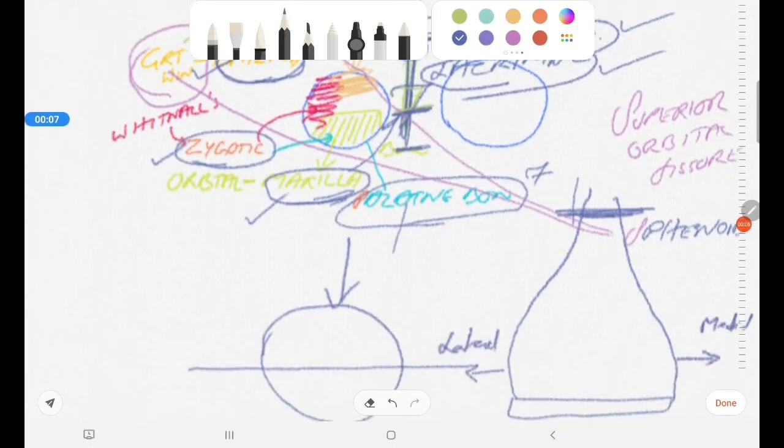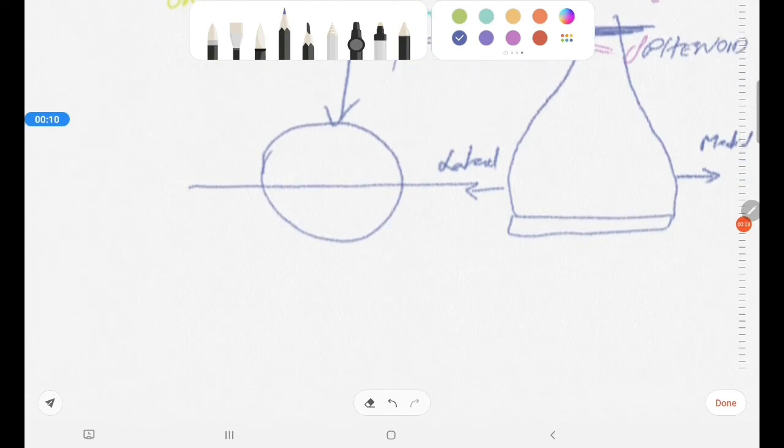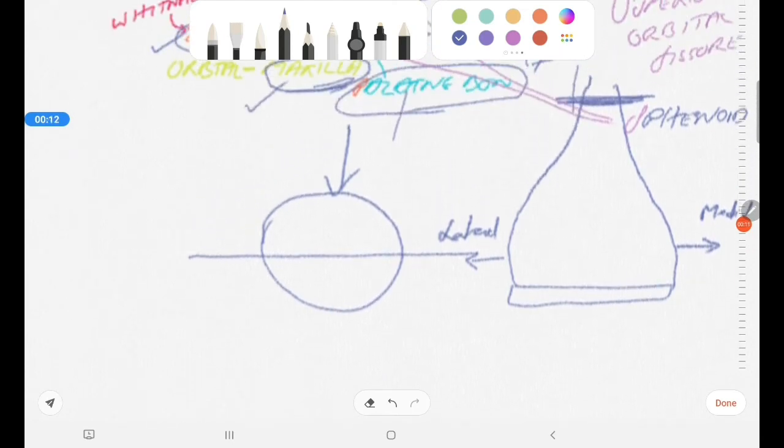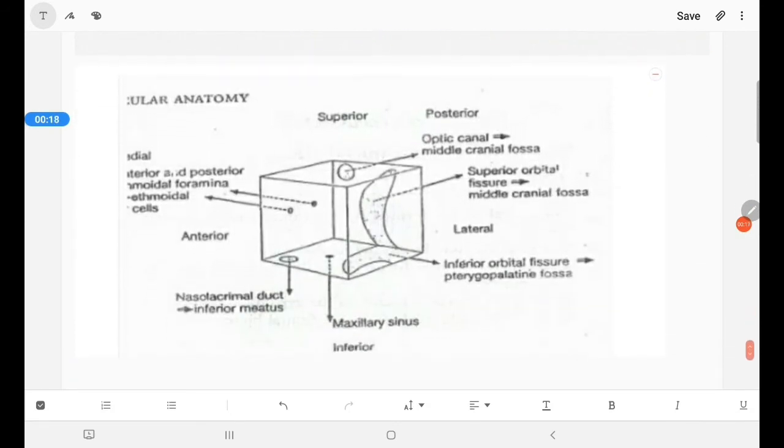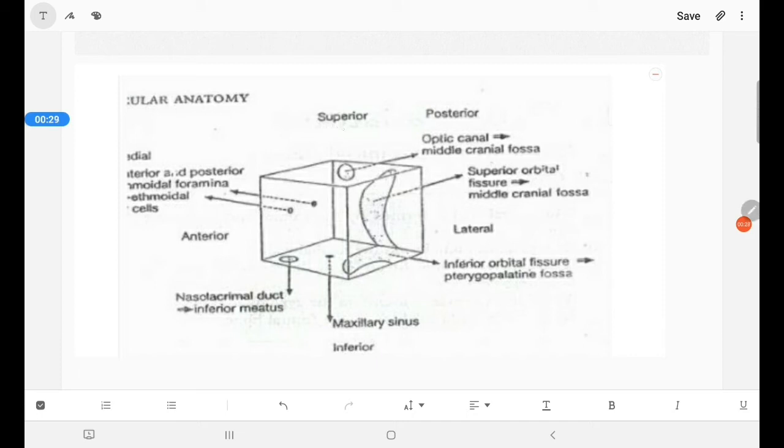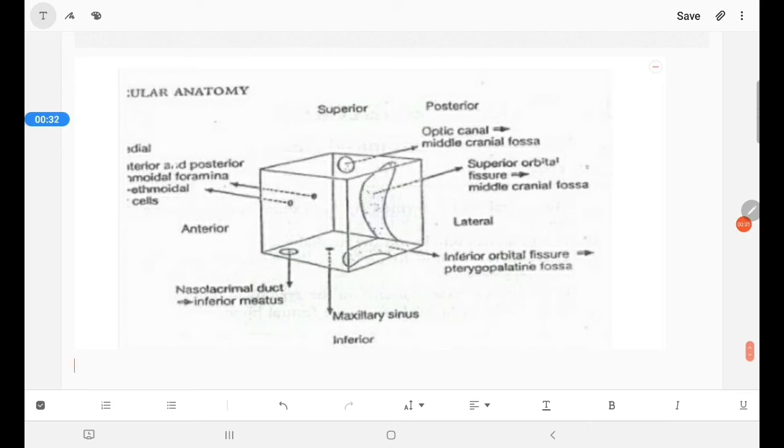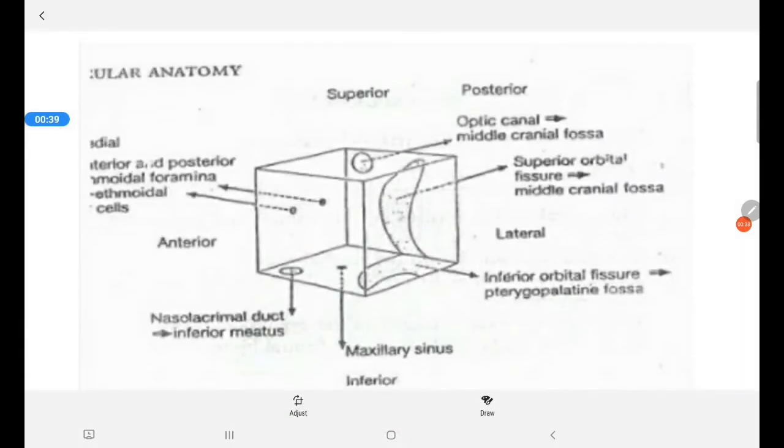Let us go into certain other relationships of the orbit. This is an important picture and these are the associated structures, anatomical structures related to the orbit. We have this as the superior. This is the superior structures, superior relationships. This is the inferior.